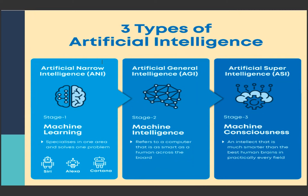The first type basically solves one area of problems. The second stage is more advanced - it becomes smarter and can do everything a human can do; this is something futuristic at this point of time. The third type is wherein it is more conscious - it has the psychology and emotion level of human brains as well, and this is where the real intellectual machines will come into picture.